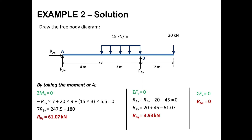After finding RBY, we apply the second static equilibrium equation, summation of FY equal to zero: RAY + RBY − 20 − (15 × 3) = 0, giving RAY = 3.93 kN. Applying the third equation, summation of FX equal to zero: since there is only one support reaction in the horizontal direction and no other horizontal forces, RAX = 0. So we have found RBY, RAY, and RAX.